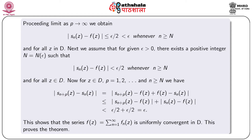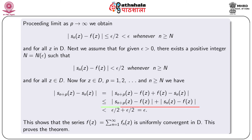Next we assume that for given ε > 0 there exists a positive integer N depending only on epsilon such that |Sₙ(z) − f(z)| < ε/2 whenever n ≥ N and for all z in D. Now for z in D, p = 1, 2, …, and n ≥ N, we obtain |Sₙ₊ₚ(z) − Sₙ(z)| ≤ |Sₙ₊ₚ(z) − f(z)| + |Sₙ(z) − f(z)| < ε. This shows that the series f(z) = Σfₙ(z) is uniformly convergent in D. This proves our result.